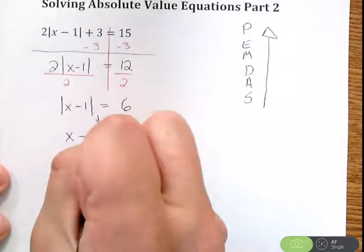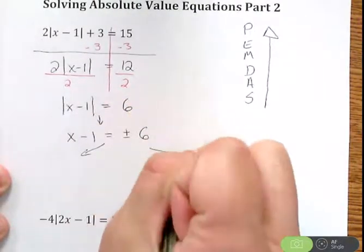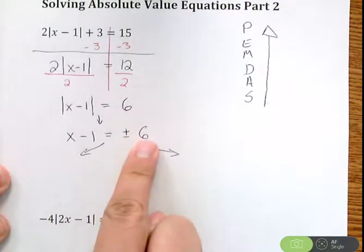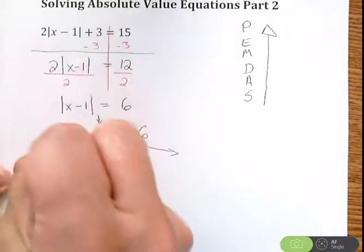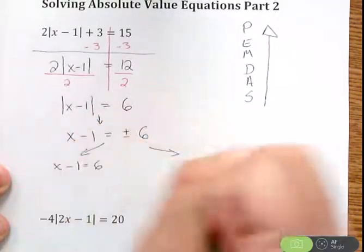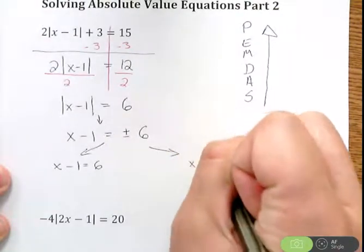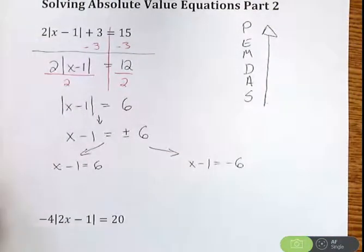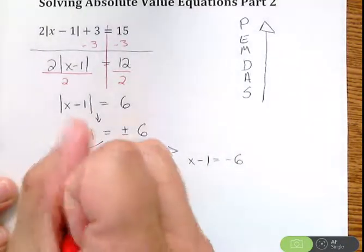And then our last step, if you remember from part 1, is we're going to split this up into two equations, because there's both a positive and a negative 6 here. So we're going to have x minus 1 equals 6, and x minus 1 equals negative 6. And we just solve these two basic equations, and we will be finished.